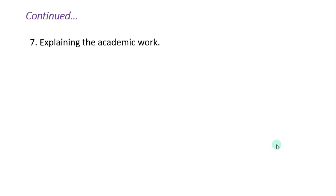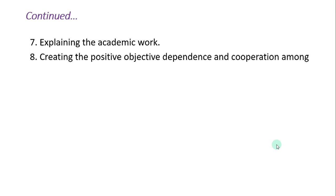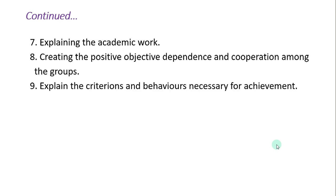Then, explaining the academic work — what work we have to do, that we have to explain. Creating positive interdependence and cooperation among the group. Then, explaining the criteria and behaviors necessary for achievement — to achieve the task or the goal, what criteria we should keep in mind, that we have to explain.